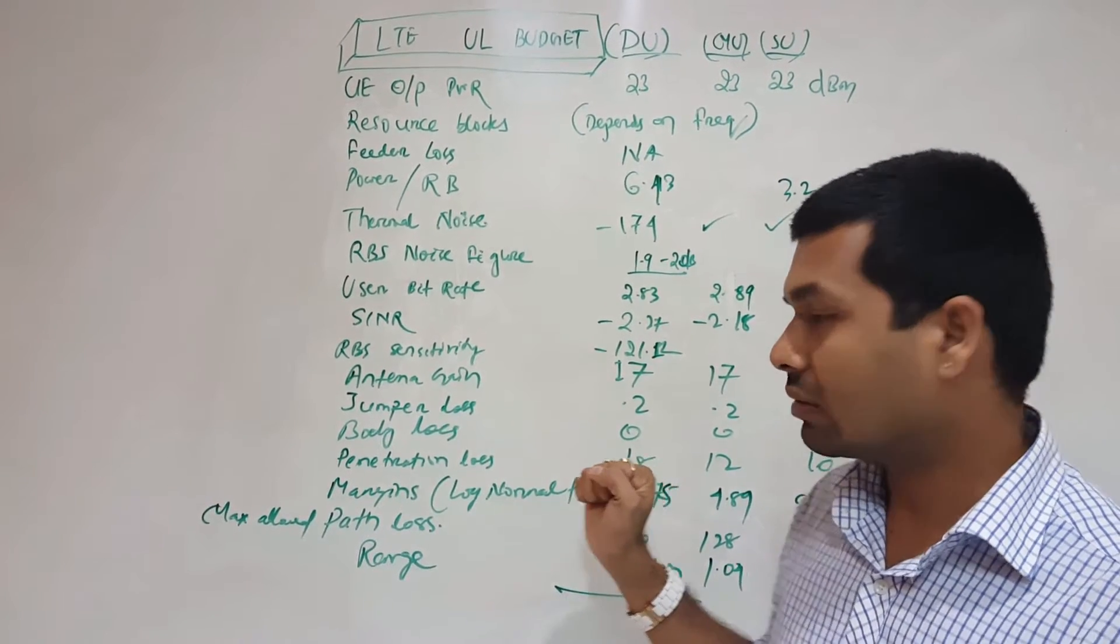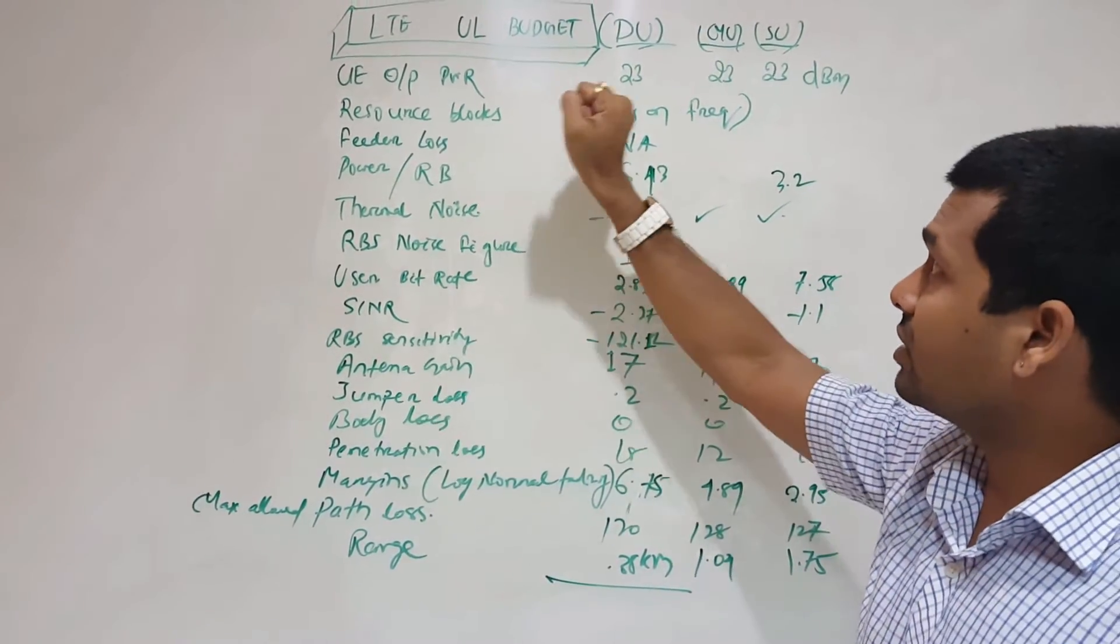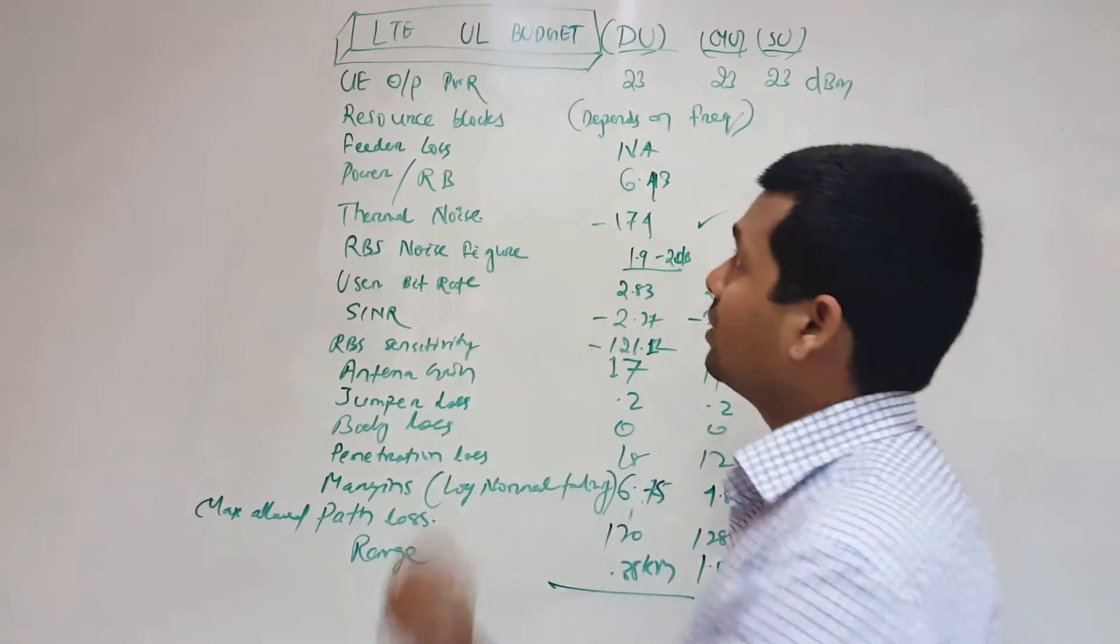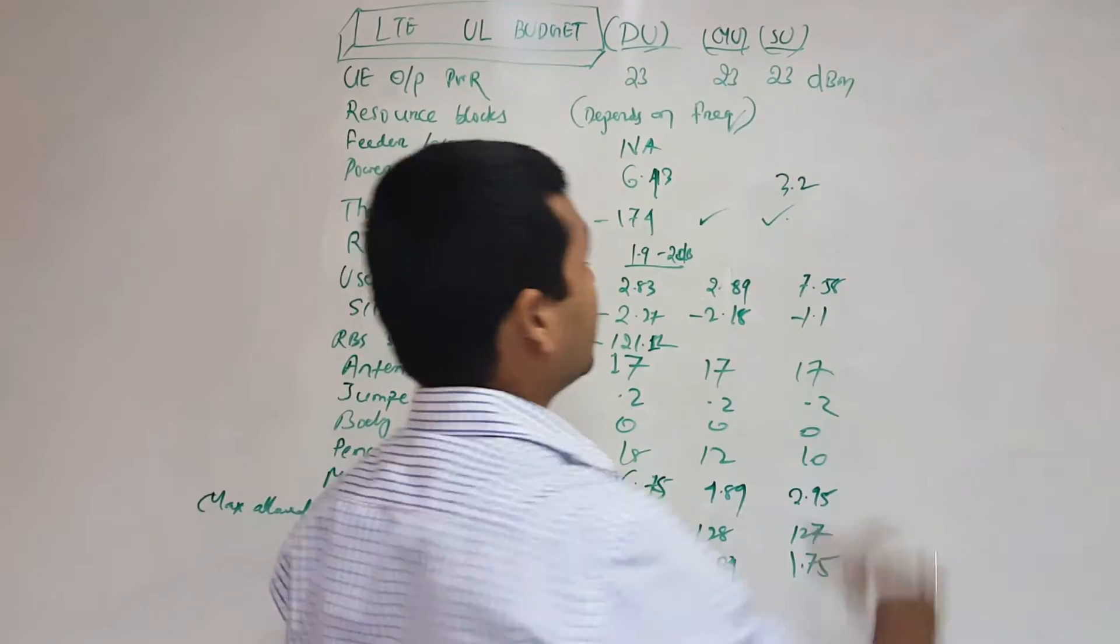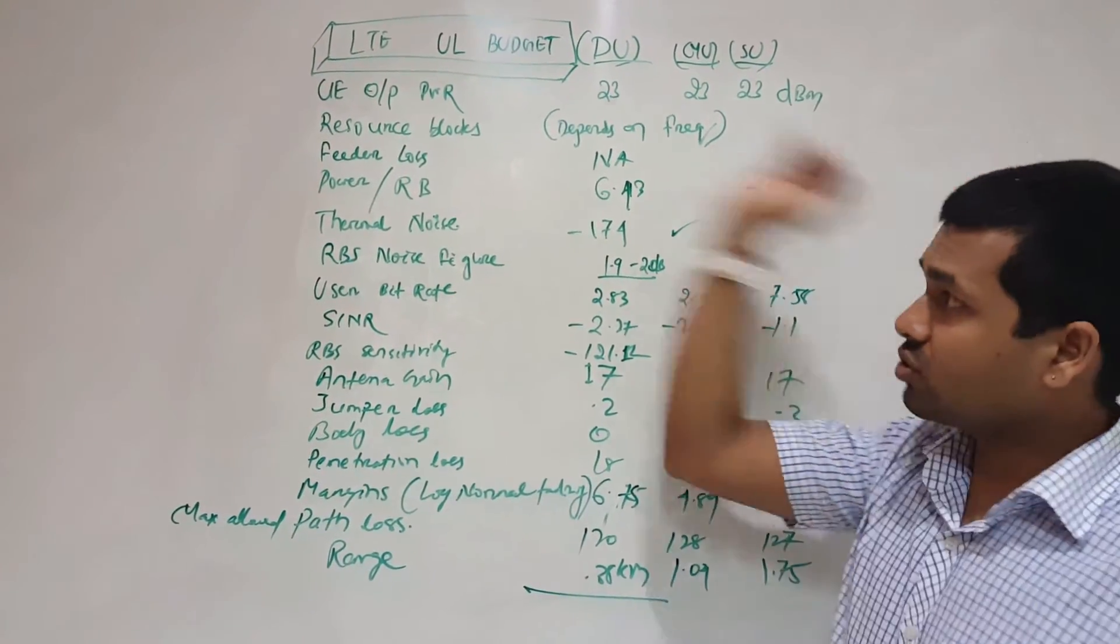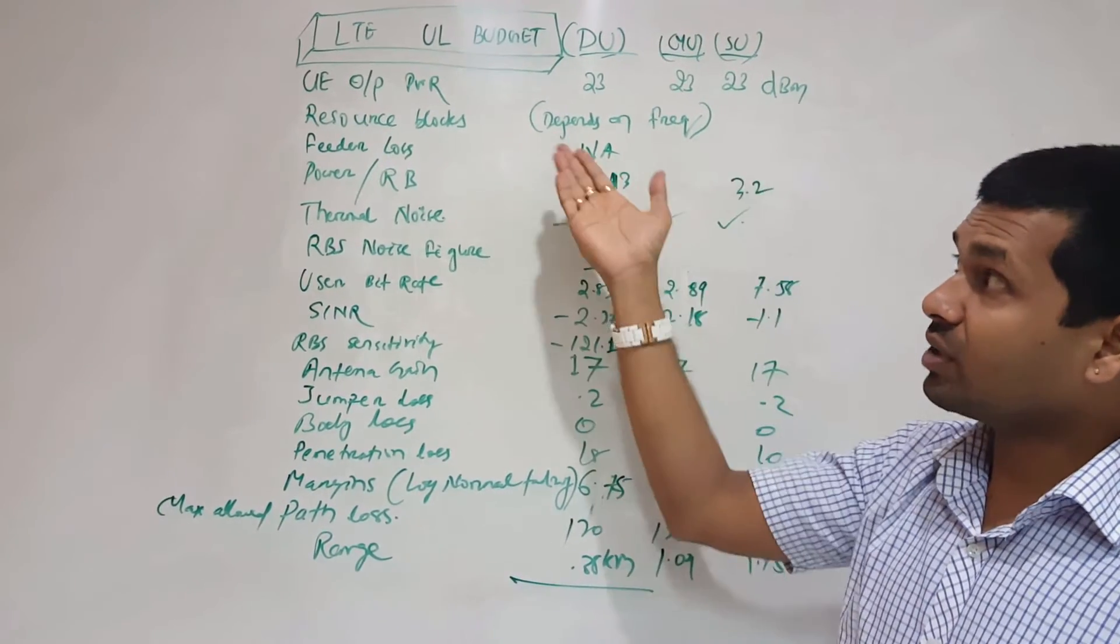Let's see what all things we calculate in the uplink budget. UE output power is 23 dBm. Resource blocks depend on frequency available. Like if you are having 20 megahertz, resource block would be 100. For 75, 75 resource blocks for 15 megahertz. For 10 megahertz it would be 50 resource blocks accordingly.